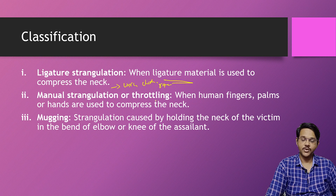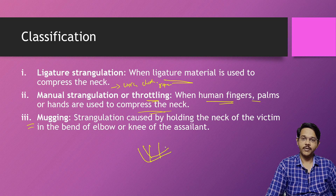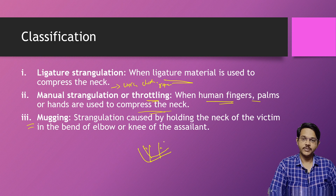Then there is manual strangulation, also called throttling, where human fingers, palms, or hands are used to compress the neck. Next is mugging, where strangulation is caused by holding the victim's neck in the bend of the elbow, so the victim is held by the elbow or knee of the assailant and the neck is compressed around the sides or front.